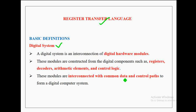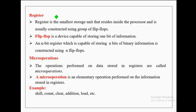These modules are interconnected with common data and control paths to form a digital computer system. We need a data path to transfer data from one register to another register, and a control path is required to send control signals. That's why hardware modules inside a computer system have to be interconnected with common data and control paths.